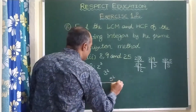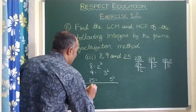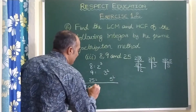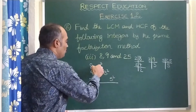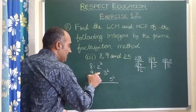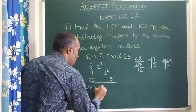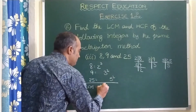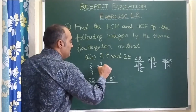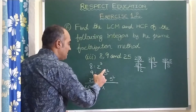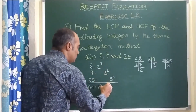Now let us write the LCM. As I told you, LCM stands for least, but we should take the highest power. 2 power 3 is highest — nothing for 9 or 25. Into 3 power 2 — 3 power 2, and 3 power nothing. So 3 power 2 is highest.